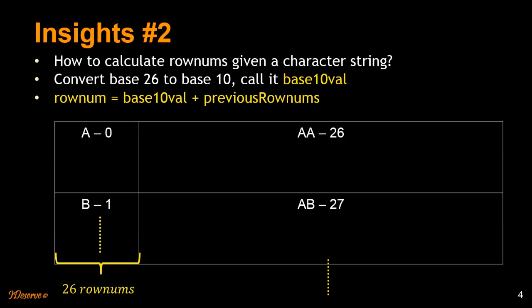And then once we have the base 10 value, we add it to the number of previous row numbers that we have. So after calculating the base 10 value for AA, we'll add 26 to that because AA lies serially after Z. So it's after how many row numbers? 26. So whatever base 10 value we have, we add 26 to that.